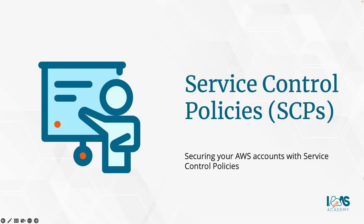In a previous lecture, I introduced you to the AWS Organizations service. A key feature of that service is service control policies. Service control policies are available if you go with the all features option of configuring your AWS Organizations service. Basically, these are guardrails — permission boundaries that help you define what services you can consume within a given member AWS account, which regions you can operate in, and what API actions you can actually call. In this lecture, I'd like to cover the key areas you need to be aware of for the AWS Certified Solutions Architect Associate exam, and in upcoming labs we're going to look at how to actually implement service control policies.